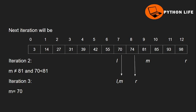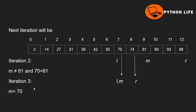We update the upper value so it becomes 70. The middle value is now 70. We find that 70 equals 70, so the element is present. In the binary search algorithm, we found the value 70 at the third iteration.